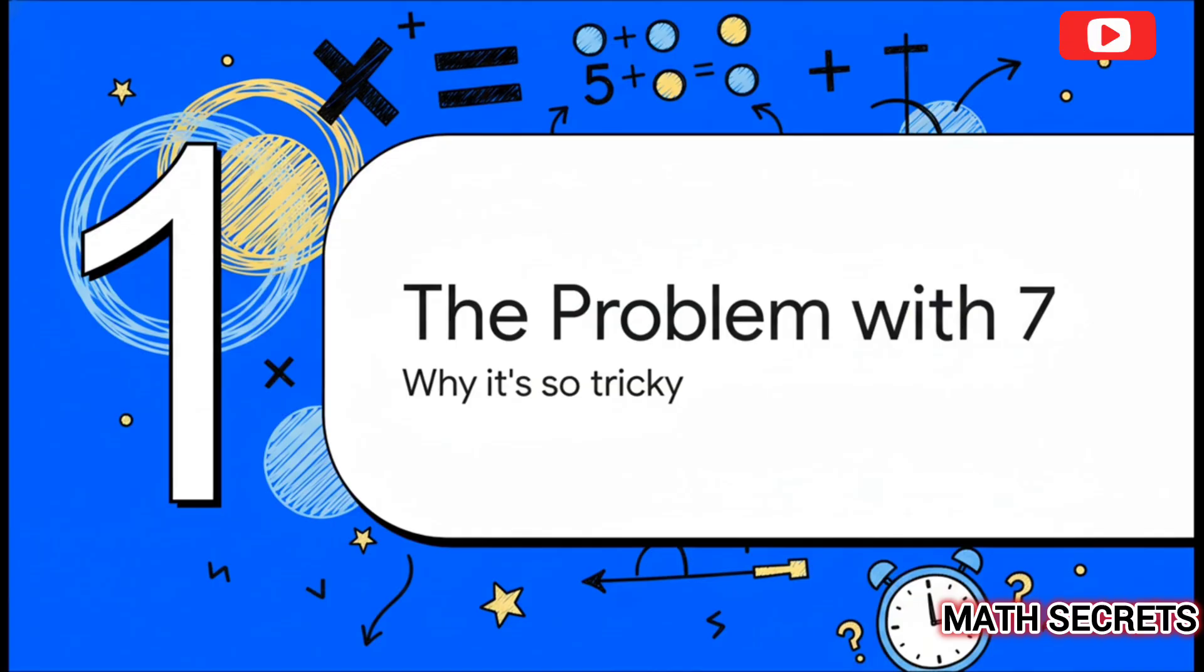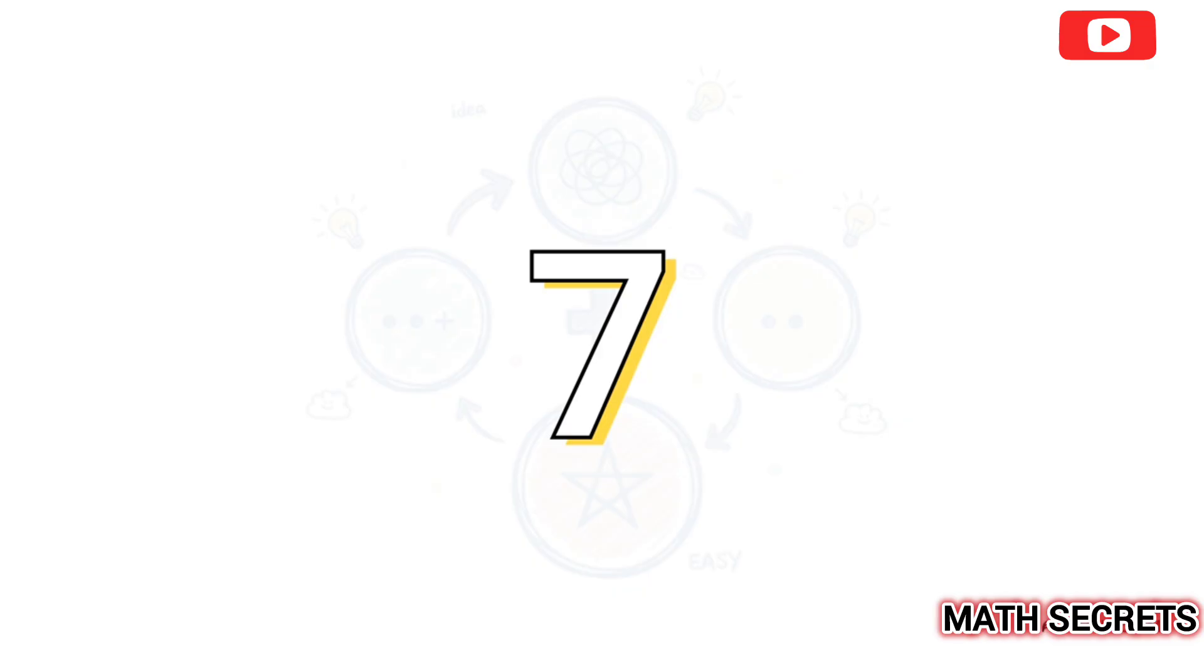What is it about this particular number that trips so many of us up? I mean, it's just a single digit, right? But it's the one that often makes us pause. Unlike the twos, which is just simple doubling, or the fives, which have that nice, clean five-zero pattern, the multiples of seven can feel totally random and tough to memorize. But hey, that is all about to change.